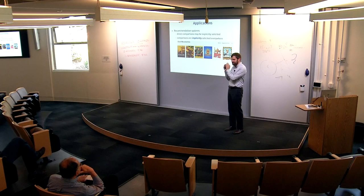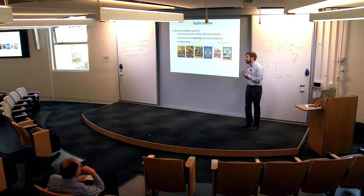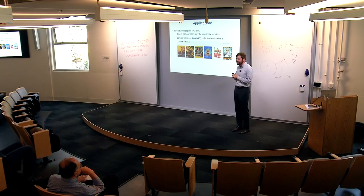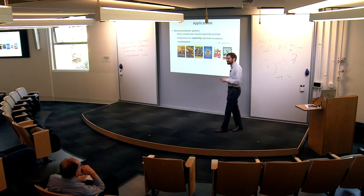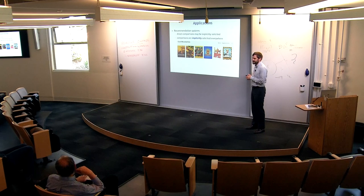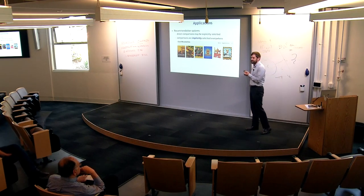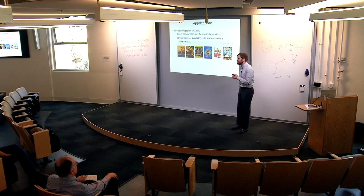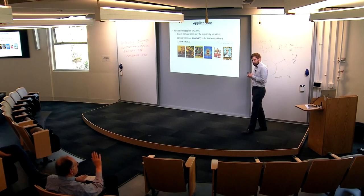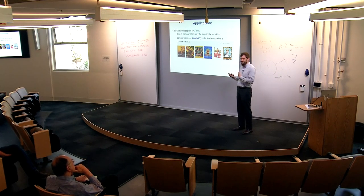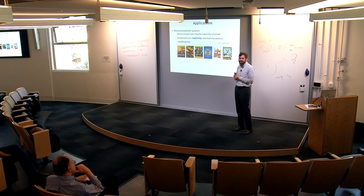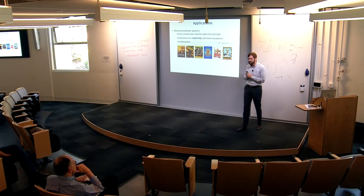I'm going to focus on the simplest case where we only have two items at a time, though if you selected one item from six, you could think of that as five paired comparisons at once. If you were Netflix, you could control what you present. The choice of successive pairs can be adaptive. I'll describe what's possible under a model where they're not adaptive, then we'll see there are big gains by doing something adaptively.